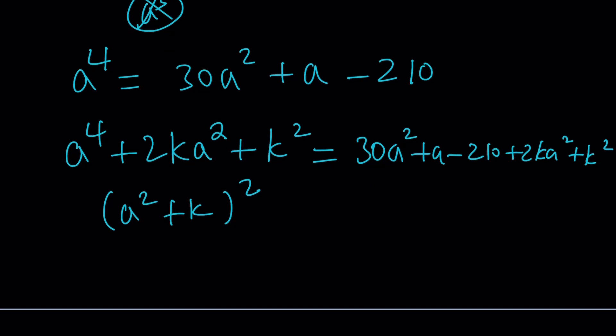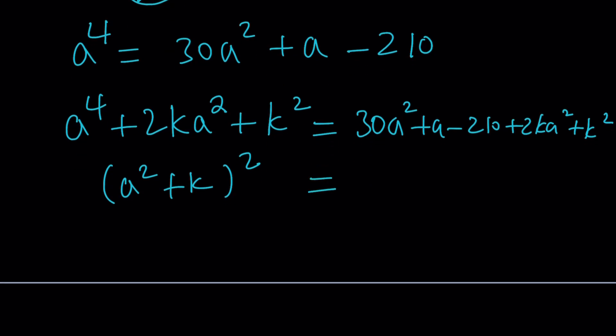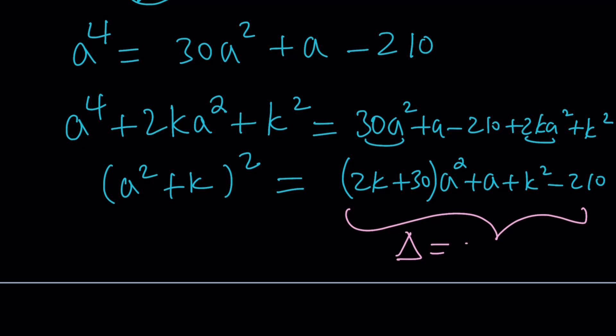That way, we're going to get something like a squared plus k quantity squared. Make sense? That's the goal. And of course, you have to add it on both sides. So 30 a squared plus a minus 210 plus 2k a squared plus k squared. Make sense? Now, we need to arrange the right hand side a little bit since we're working with a here.